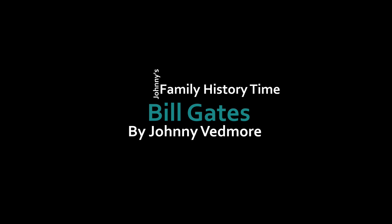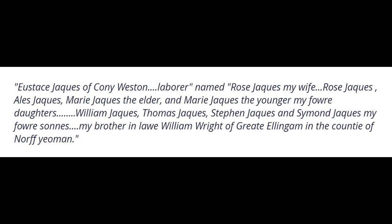One of Peter Gates' sons, from the final generation of Gates family to reside in High Easter, was Eustance Gates, born in about 1569. Eustance didn't go by the name Gates for all of his life — he would also call himself Eustance Jacques and Eustance Jowets, the latter even written on his gravestone. Eustance also referred to his sons with the same surname in public documentation, such as his last will and testament from the 15th of March 1626: 'Eustance Jacques of Coney Western, labourer, named Rose Jacques my wife, Rose Jacques, Ailes Jacques, Marie Jacques the elder, and Marie Jacques the younger my daughters; William Jacques, Thomas Jacques, Stephen Jacques, and Simon Jacques my sons; my brother-in-law William Wright of Great Illingham in the county of North, yeoman.'